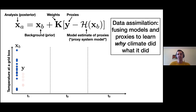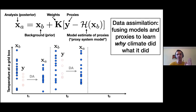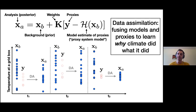Going back to the cartoon: we have our initial guess, we have the proxies, we compute this equation, and we get a new ensemble probabilistic estimate. This is done for each particular year, and then we move forward in time — for annual data assimilation, one year followed by the next. When there's wide uncertainty in our proxies, that's reflected in greater spread in the answer. Conversely, very low proxy uncertainty also gets reflected in the answer. That's the fundamental process.